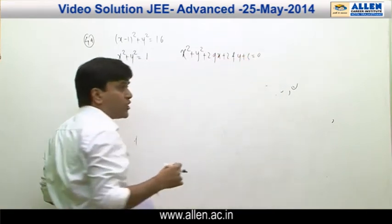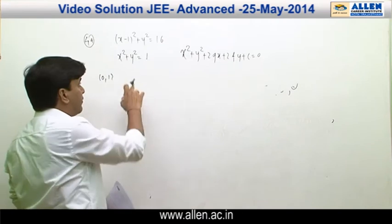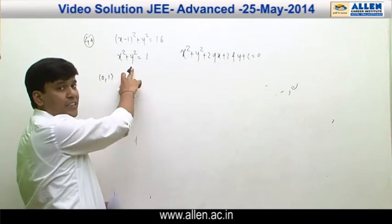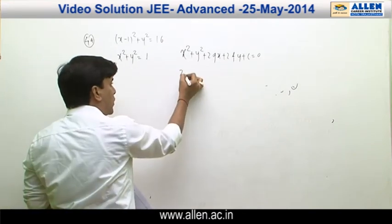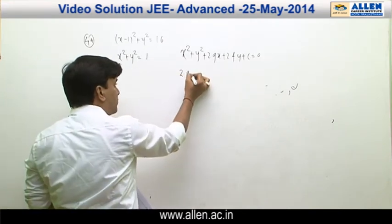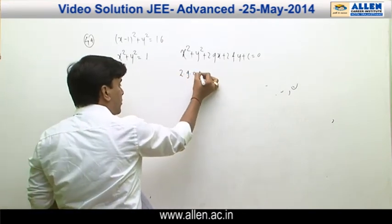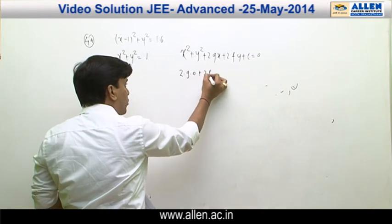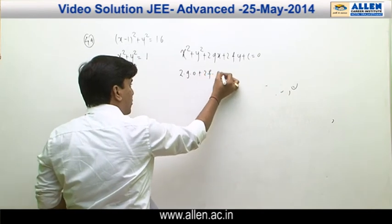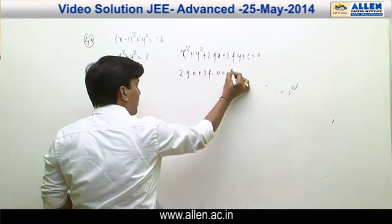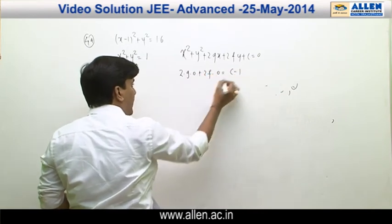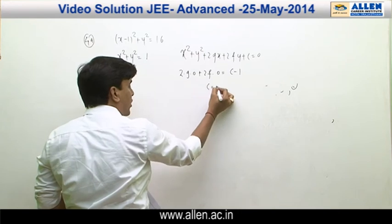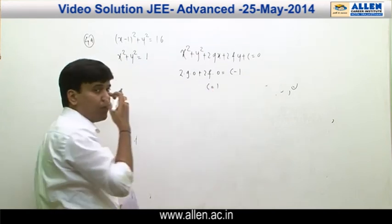Applying the condition of orthogonality with x² + y² = 1: 2g₁g₂ = 0, 2f₁f₂ = 0, and c₁ + c₂ = c − 1. Hence the value of c is 1.